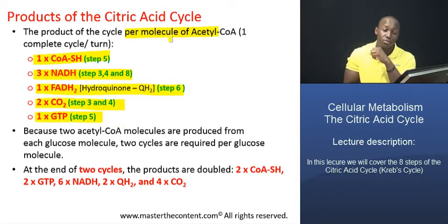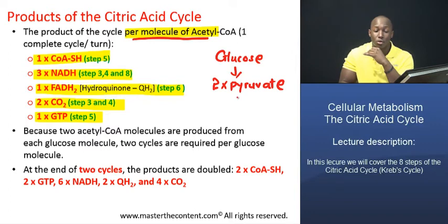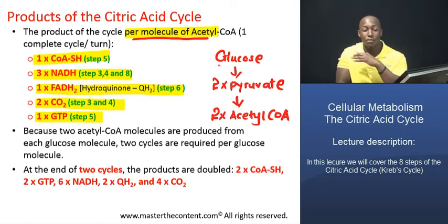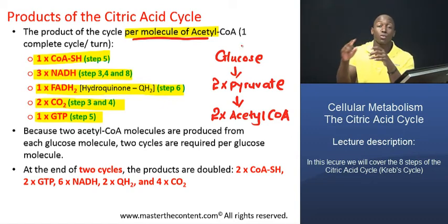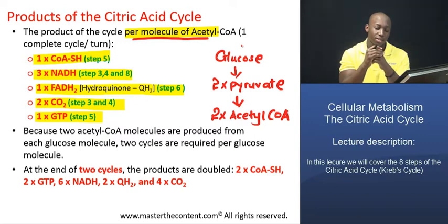Those are the products produced per molecule of acetyl coenzyme A. But remember, for each molecule of glucose that goes through glycolysis, we produce two molecules of pyruvate. Each of those pyruvate molecules is then fed into the mitochondria where they're converted into acetyl coenzyme A. So we have two molecules of acetyl coenzyme A produced per molecule of glucose, meaning two complete revolutions of the cycle per molecule of glucose.